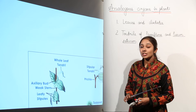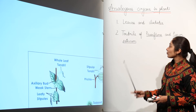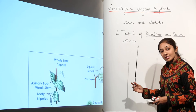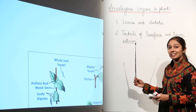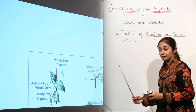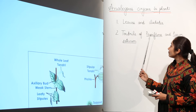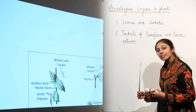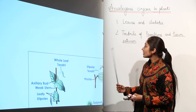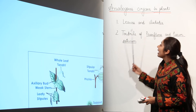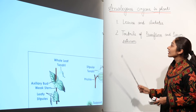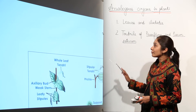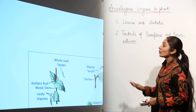So the tendrils of Passiflora and the tendrils of Pisum sativum are analogous organs. They have different origins and different structures, but they perform the same function — helping in support and climbing. Since these tendrils in the two plants have different origins, that is why they are considered analogous organs in plants.